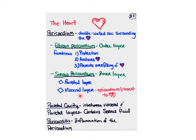The visceral layer of the serous pericardium is also called the epicardium when you're talking about the layers of the heart wall. So there are two terms sometimes used — the visceral layer is the inner layer of the serous pericardium, but the term given to it when talking about the outer layer of the heart wall is the epicardium. Same thing.